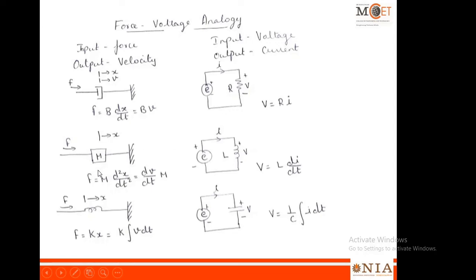For the mass element, the opposing force due to mass is given by M·(d²x/dt²) or M·(dV/dt), since acceleration is dV/dt. In an electrical circuit, the voltage drop across an inductor is given by V = L·(dI/dt). These two equations are analogous: F equates to voltage, velocity to current, and mass becomes equivalent to the inductor L. For the spring element, F = kx, or in terms of velocity, F = k·∫V dt, since integration of velocity gives displacement. The equations have been written in terms of velocity so you can easily compare electrical and mechanical system equations.